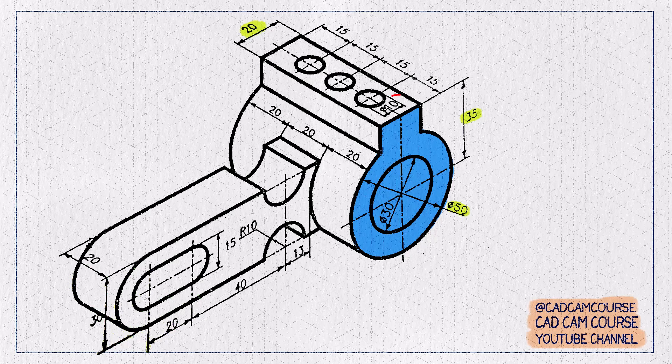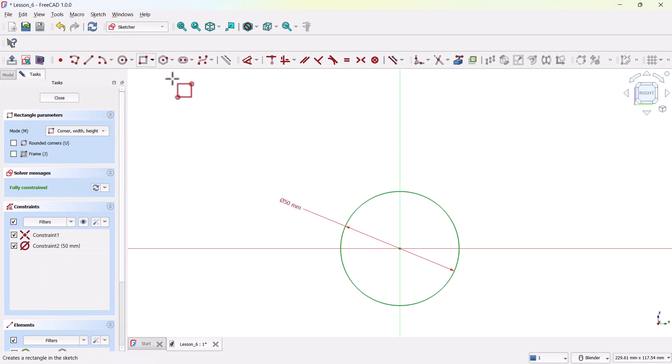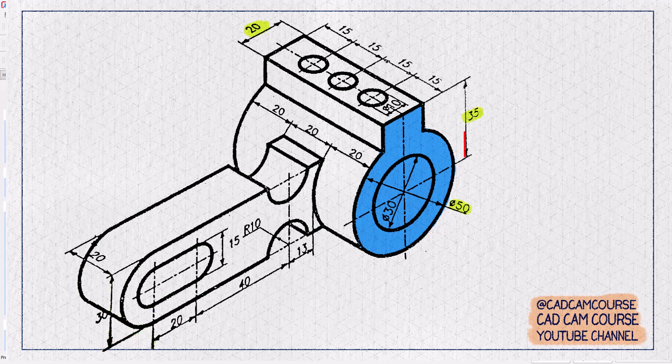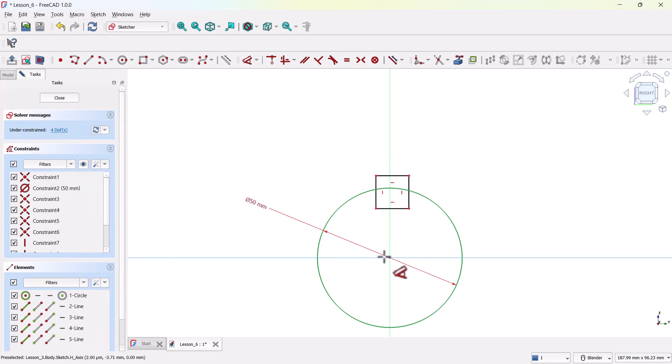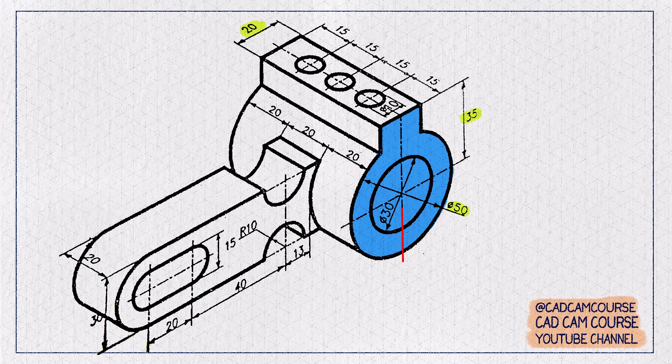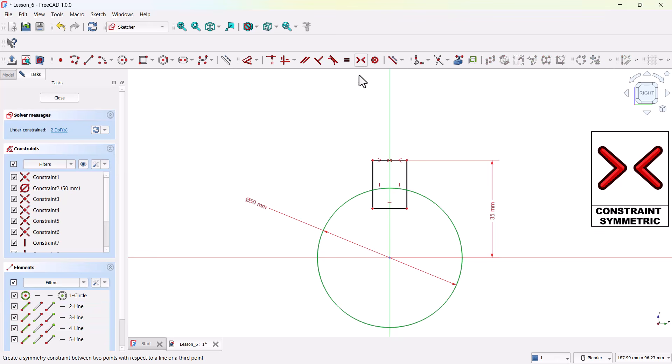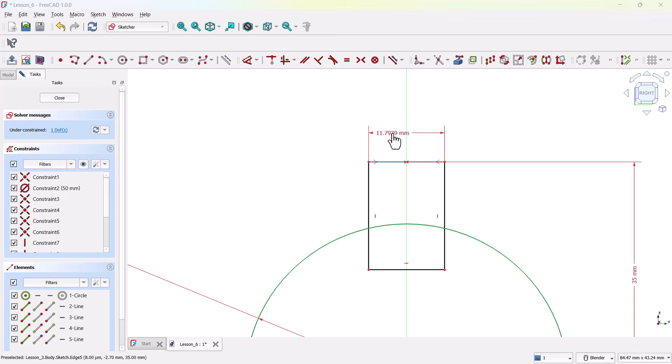Now we'll add this rectangle above it. Use the Rectangle tool and draw a rough shape on top of the circle. Grab the Dimension tool and add this dimension from center of the circle to the top of the rectangle as 35 millimeters. We need this rectangle centered, so select these two endpoints in the vertical axis, then apply the symmetrical constraint. And now set the rectangle's width to 20 millimeters.